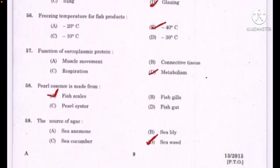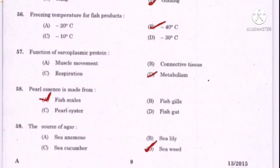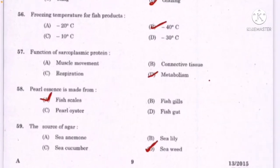Freezing temperature for fish products — correct answer option B: minus 40 degrees Celsius. Function of sarcoplasmic protein — option D: metabolism. Pearl essence is made from — correct answer option A: fish scales. The source of agar — correct answer option D: seaweed.